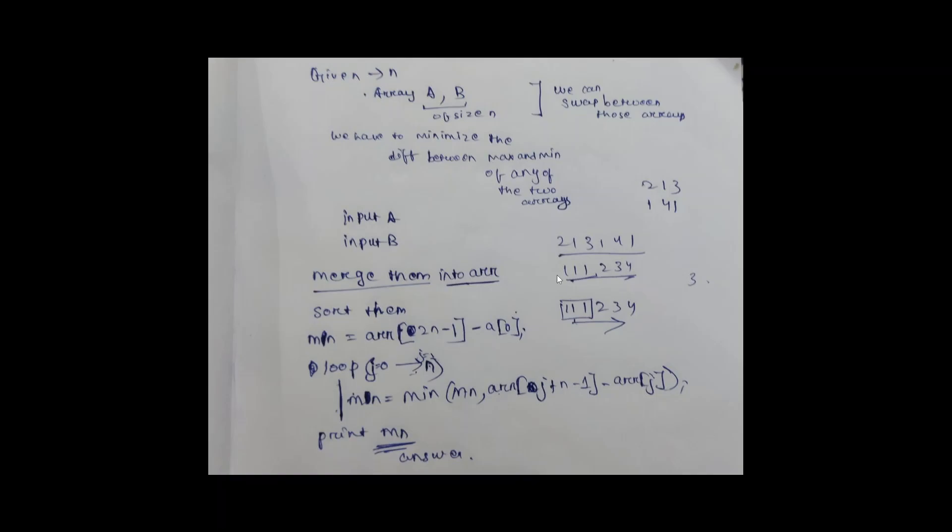Eventually it becomes 1,1,1,2,3,4. First, we find the base minimum value. As the problem states, max minus min means the maximum value, which is the last element, minus the minimum value, which is the first element after sorting.